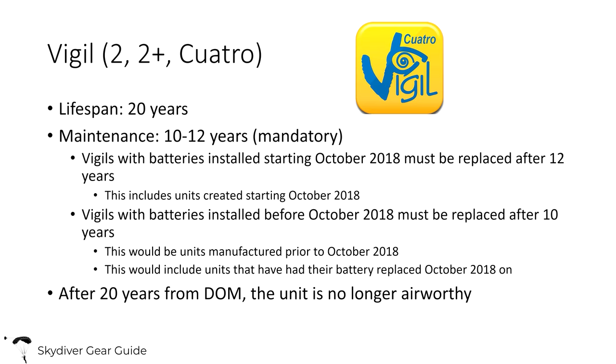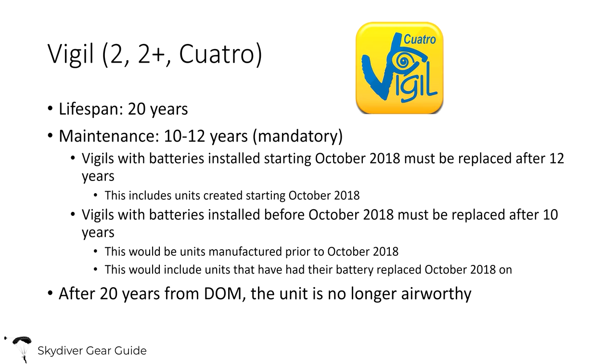Of the three manufacturers, Vigil — the company is called AAD — sells the Vigil 2, the Vigil 2 Plus, and the Vigil Quattro, all with a lifespan of 20 years. The Vigils used to have no maintenance requirement, and batteries lasted 10 or 12 years depending on when they were manufactured. However, riggers can no longer do the battery replacement locally — the entire unit needs to be sent in when the battery expires. Starting October 2018 and beyond, batteries last 12 years; anything made before that, batteries last only 10 years.